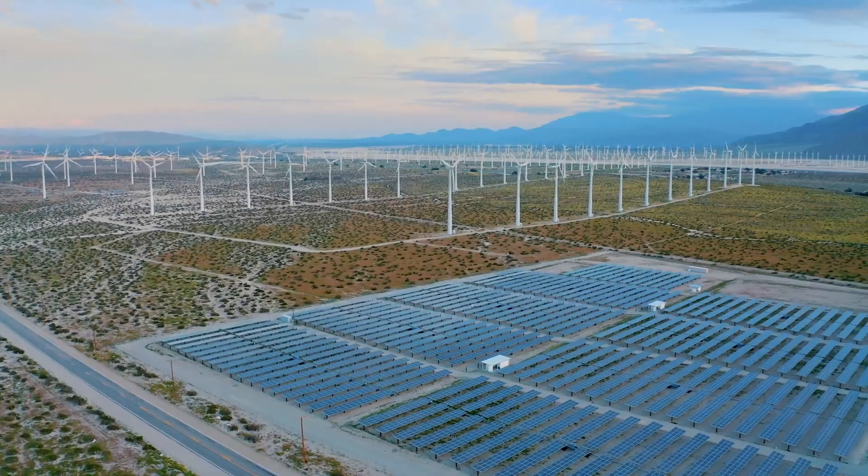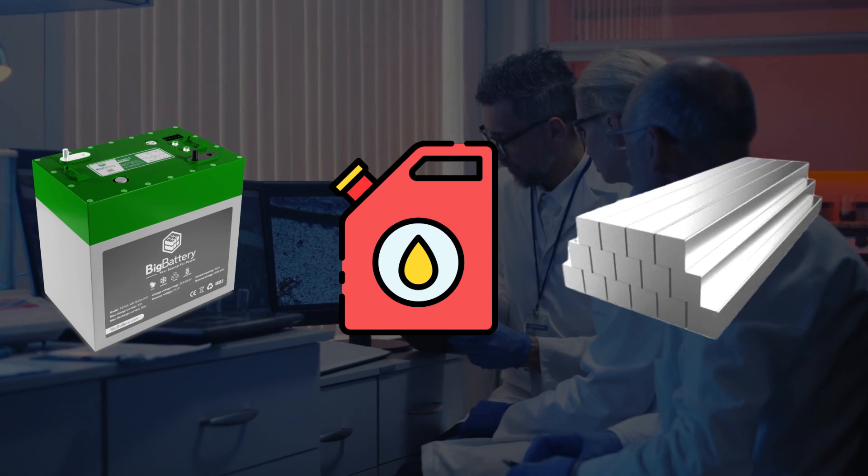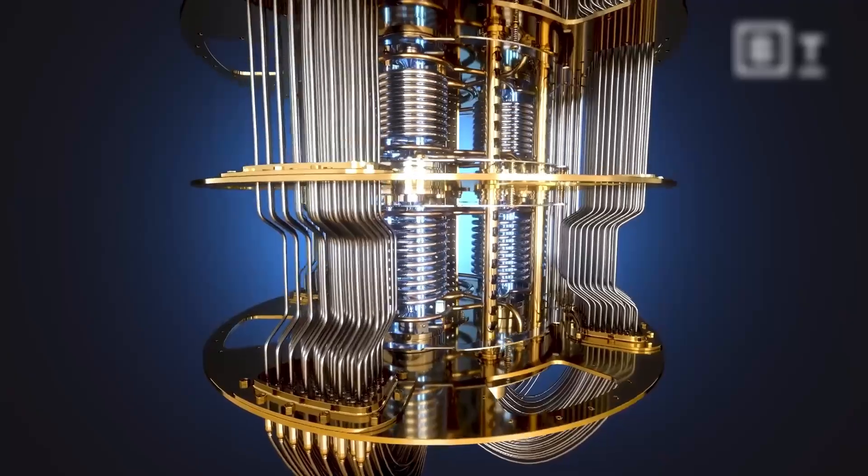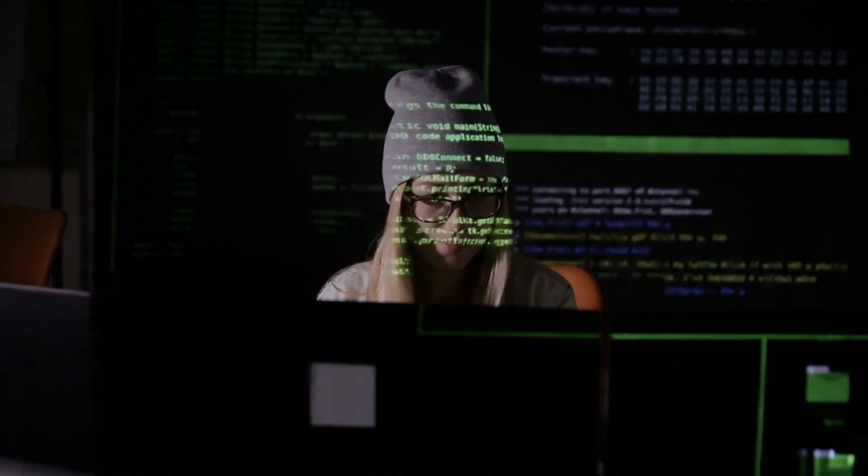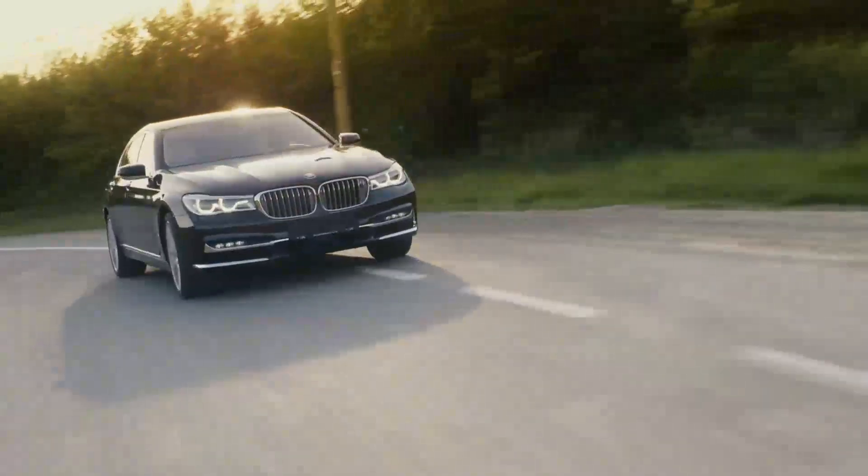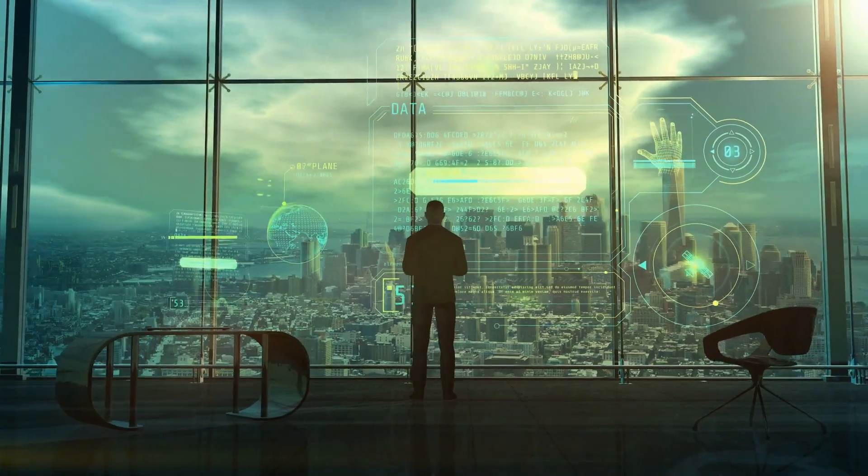Another big area is energy. Scientists want to make better batteries, cleaner fuel, and stronger materials for things like solar panels. Quantum computers can pretend to be tiny atoms, showing how they'll act before anyone builds anything. This could lead to cool new inventions like cars that run longer or houses that use less power. It's like getting a sneak peek at the future.